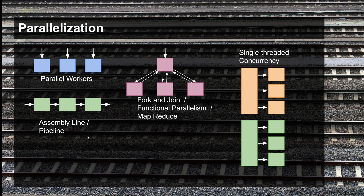The assembly line or pipeline model splits the entire job into multiple steps. Worker one carries out the first part of the job, then hands it off to the second worker, which completes the second part, and then hands it off to the third worker, which completes the final part. A concrete example: the first worker loads files from the file system, hands them to the second worker which unzips them, and then the third worker processes the data stored inside the zip files.